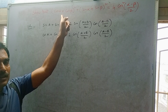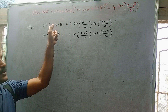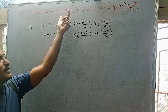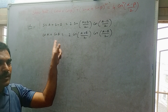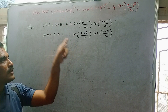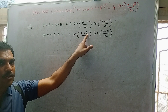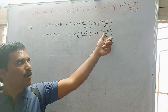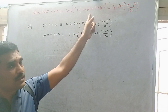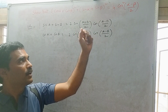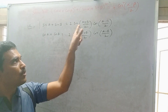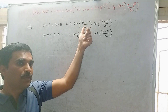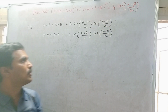In the formulas the angles are A and B, but in the problem the angles are α and β. So in place of A put α and in place of B put β. Applying the cos A + cos B formula: cos α + cos β = 2 cos((α + β)/2) cos((α − β)/2). Similarly, applying the sin A + sin B formula: sin α + sin β = 2 sin((α + β)/2) cos((α − β)/2).